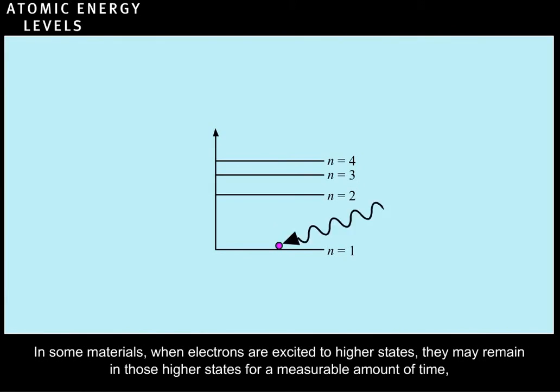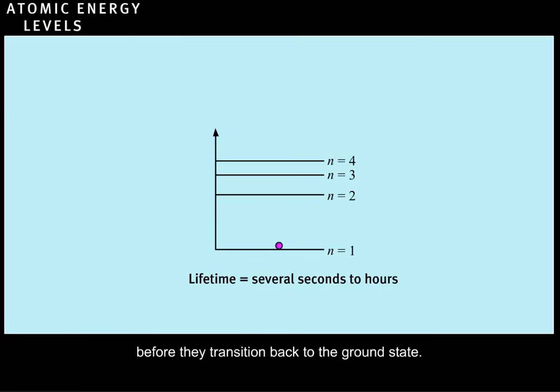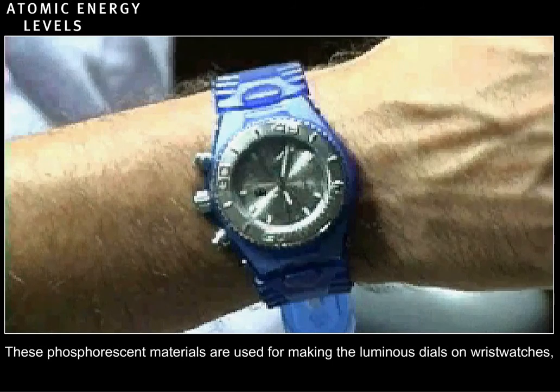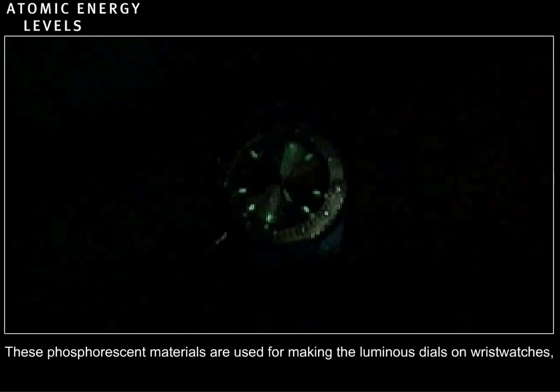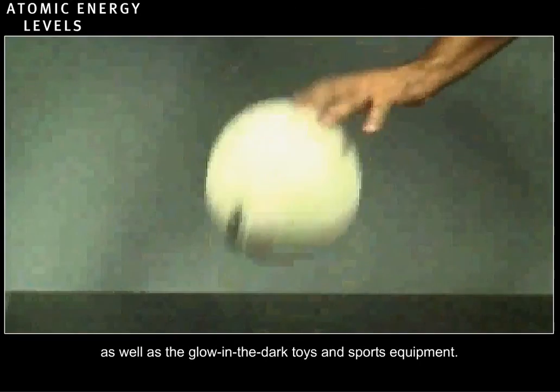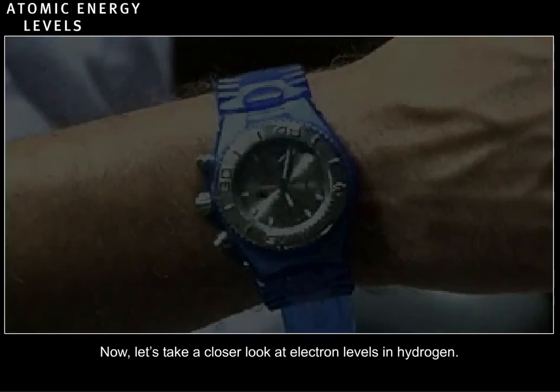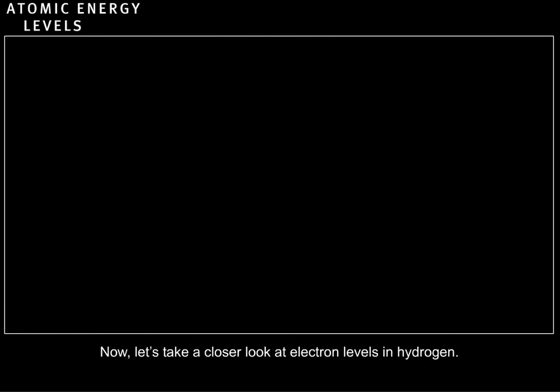In some materials, when electrons are excited to higher states, they may remain in those excited states for a measurable amount of time before they transition back to the ground state. These phosphorescent materials are used for making the luminous dials on wristwatches, as well as the glow-in-the-dark toys and sports equipment.